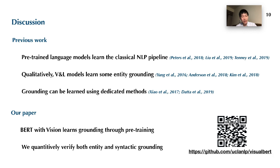Finally, we discuss related work. Our work is inspired by works on analyzing pre-trained language models, which reveal that they learned a classical NLP pipeline such as POS, NER, SRL, and coreference. Previous works in the domain of VQA have also shown qualitative examples of entity grounding. Our work, however, shows that grounding is automatically acquired through pre-training on image caption data. We also extend the notion of entity grounding to syntactic grounding and quantitatively verify both. Our code is available on GitHub — you can scan the QR code to access it.